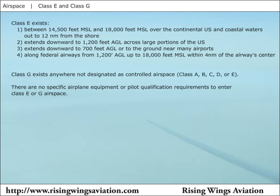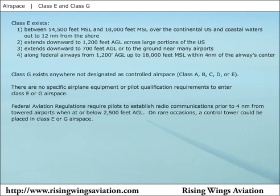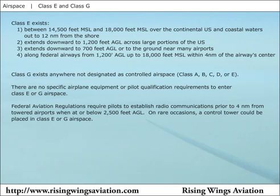While the vast majority of towered airports are designated Class D, C, or B, it is possible for an airport in Class E or G airspace to be towered. As you can see in 91.126(D) and 91.127(C), if a control tower is present and operational, you must establish radio communications prior to 4 nautical miles from the airport up to and including 2,500 feet AGL, even if that tower is in Class E or G airspace. Notice this area is identical to the typical size of a Class D airspace area.